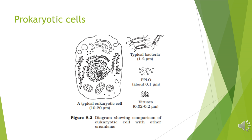Prokaryotes have something unique in the form of inclusions. A specialized differentiated form of cell membrane called the mesosome is characteristic of prokaryotes. It is an extension of the plasma membrane and may be in the form of vesicles, tubules, or lamellae. Mesosomes help in cell wall formation, DNA replication, and distribution to bacterial daughter cells.